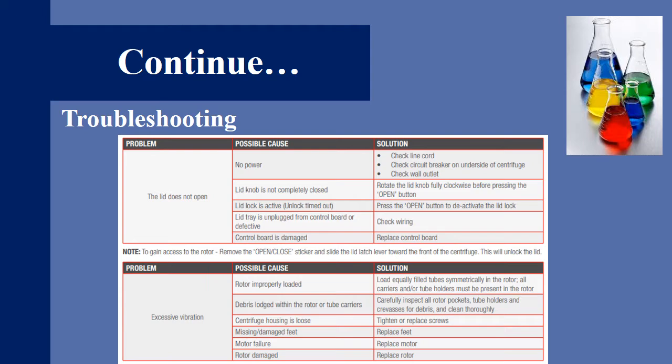If the lid tray is unplugged from the control board or defective, check wiring of the centrifuge rotor. If control board is damaged, replace the control board. Second problem we have faced in the centrifuge is excessive vibration. Excessive vibration can occur due to the rotor being improperly loaded. Load equally filled tubes symmetrically in the rotor. All carriers or the tube holders must be present in the rotor. Centrifuge housing is loose, tighten or replace the screws. Missing or damaged feet, replace the feet of the centrifuge. Motor failure, replace the motor. If the rotor is damaged then replace the rotor.